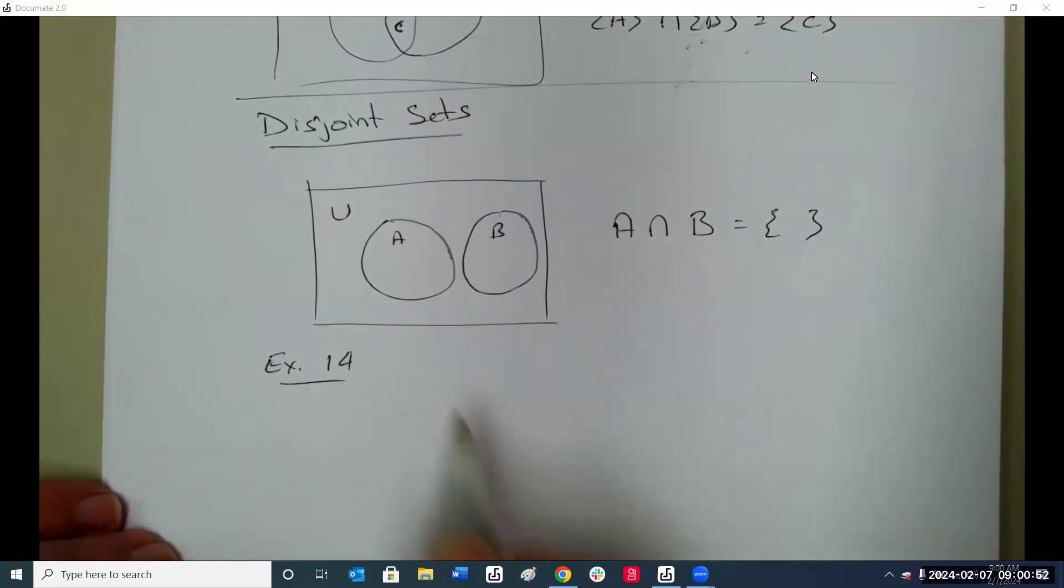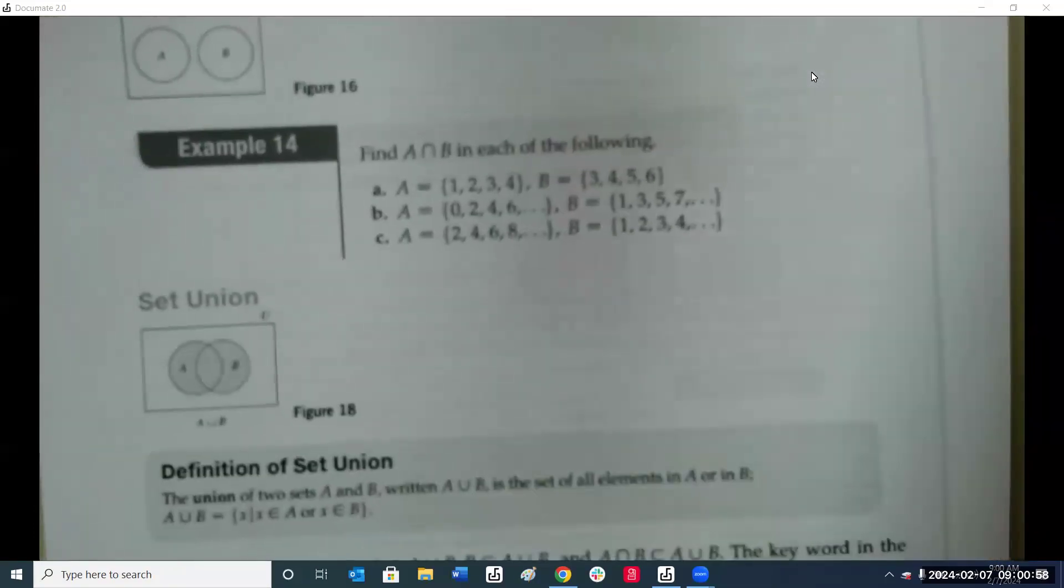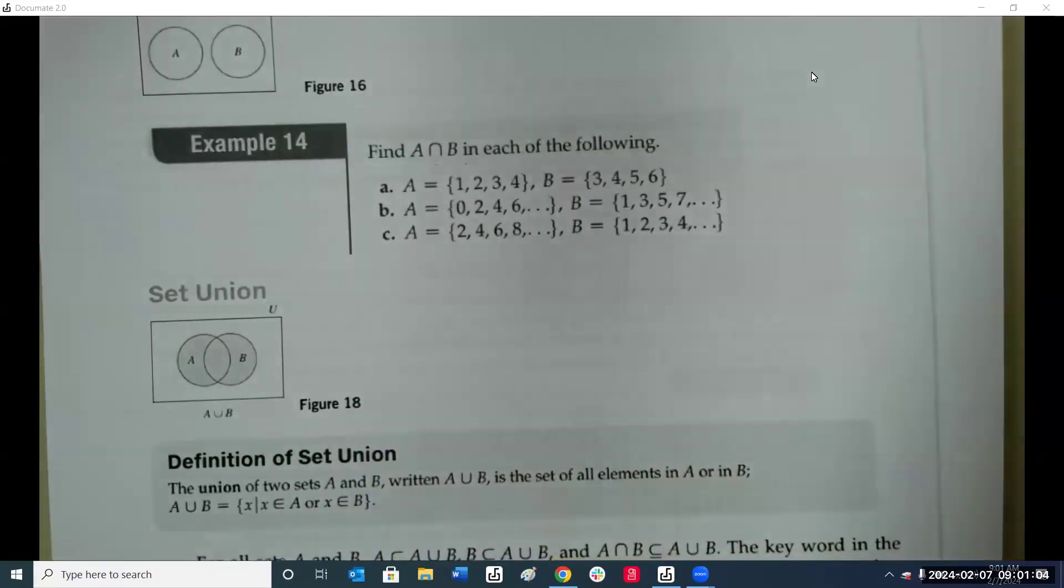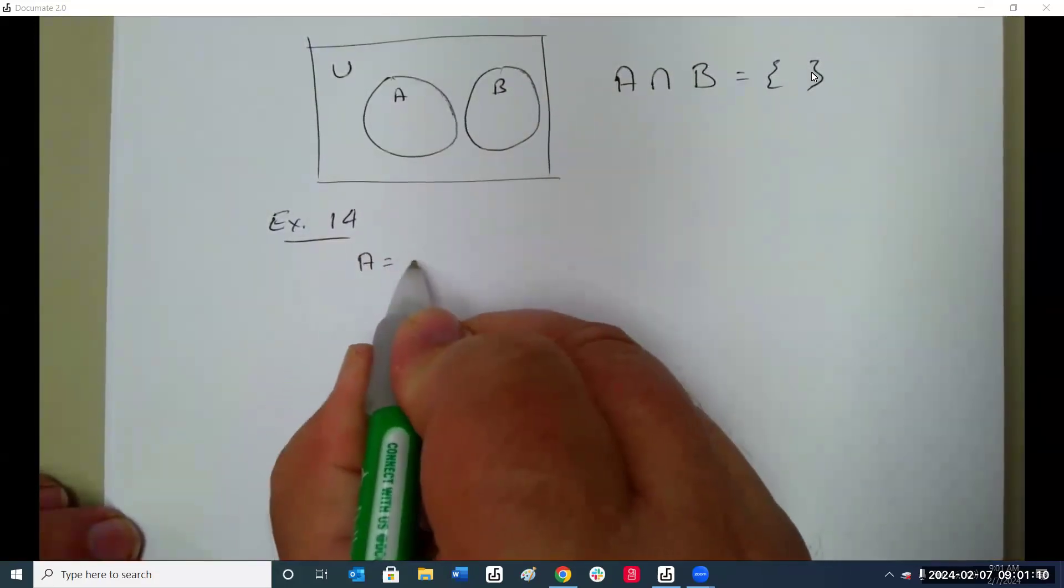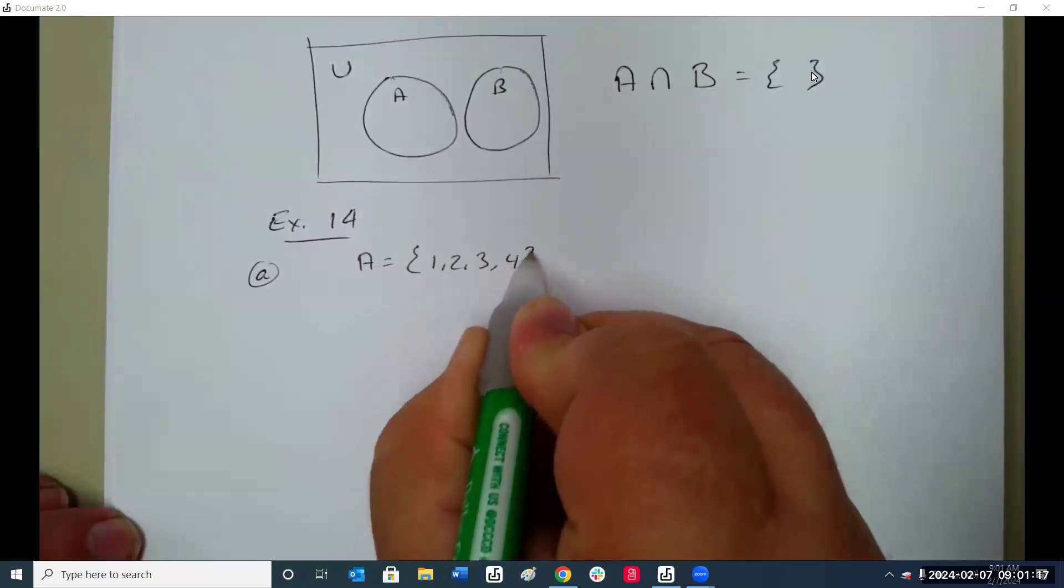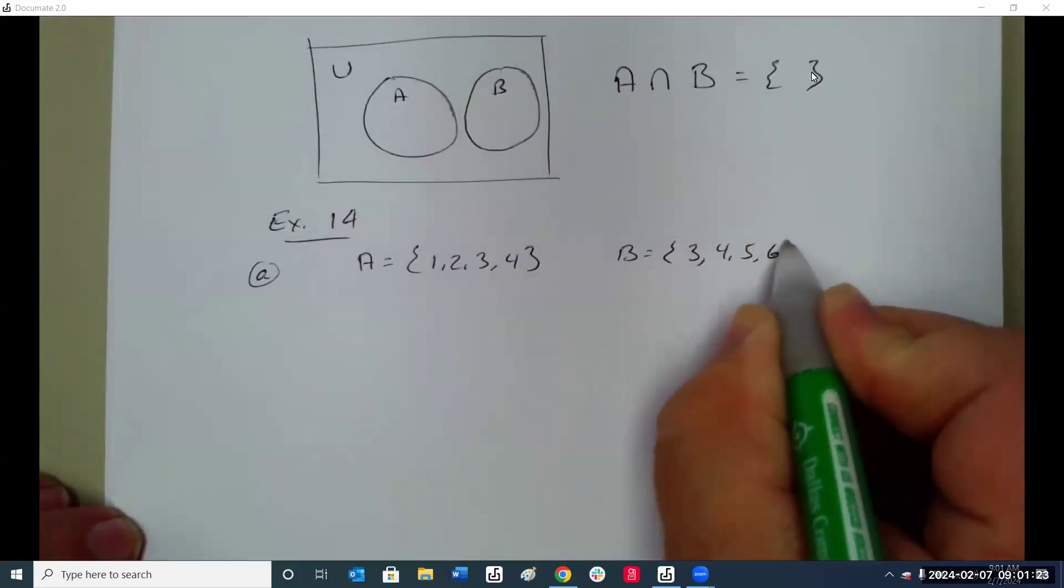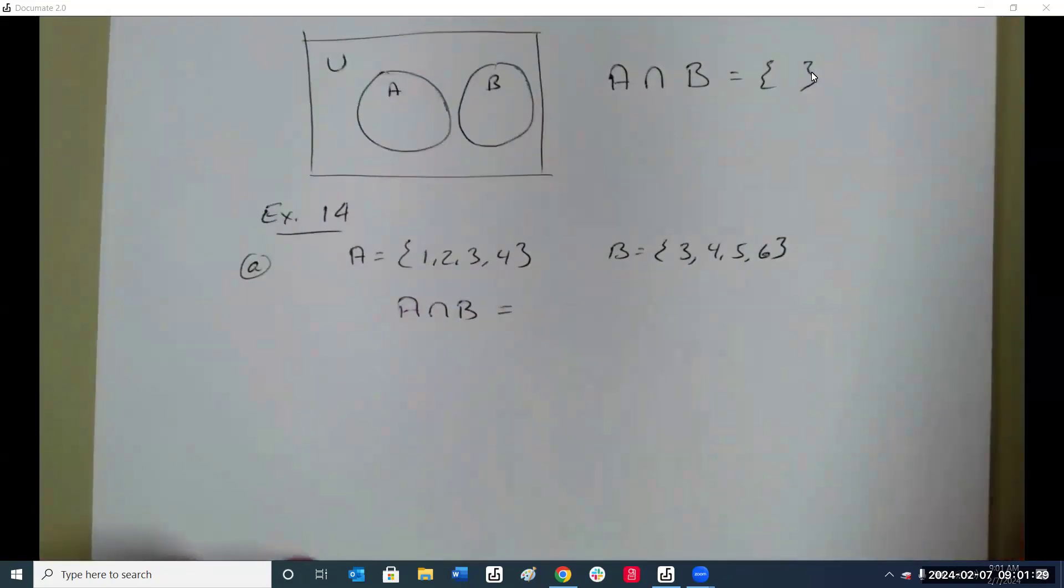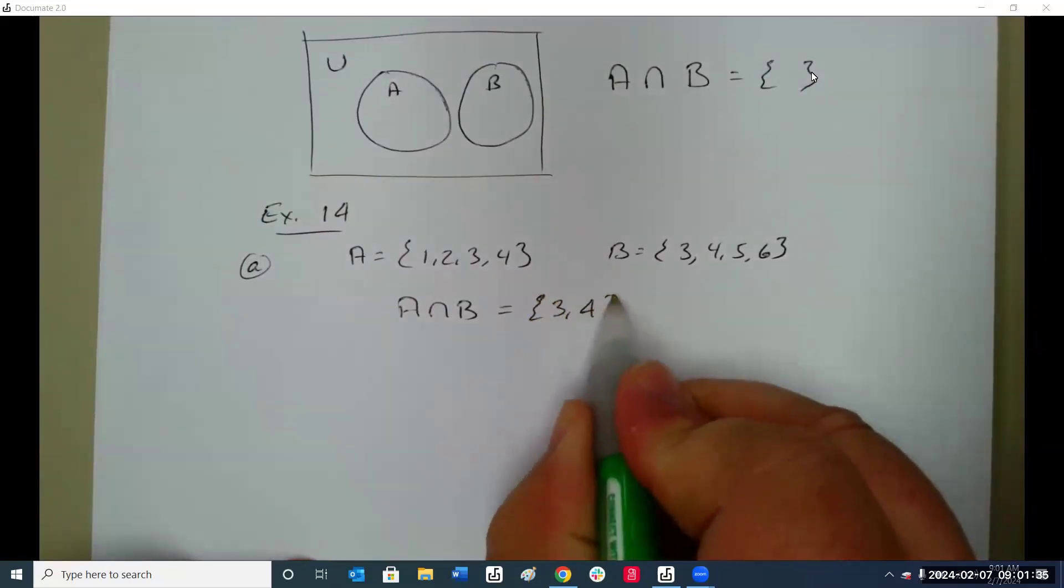So example 14 on your sheet. Find A intersect B for each of the following. Again you have these on your sheets in front of you. This is A: 1, 2, 3, 4. B: 3, 4, 5, 6. So A intersect B is equal to what, where do they overlap? Three and four.